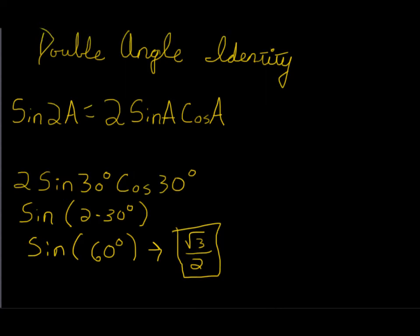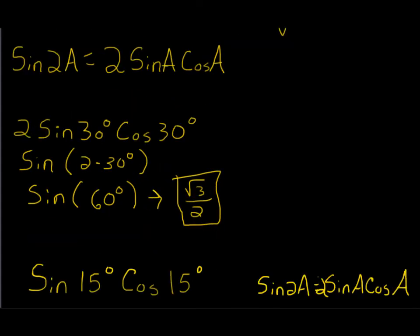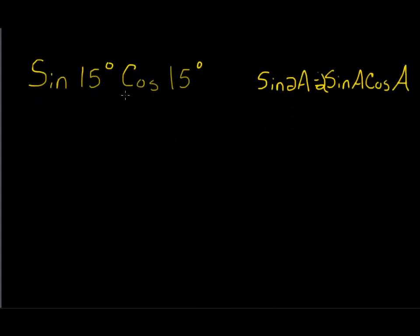Now our next problem is going to be a little trickier. Here we have sine 15 times cosine 15. That doesn't really look like our original formula, but you can relate this to that. It's still in the form sine a cosine a. Only here, these are both multiplied by 2.